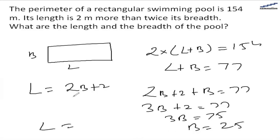So the length will be 2 multiplied by b, which is 50, plus 2, equals 52.